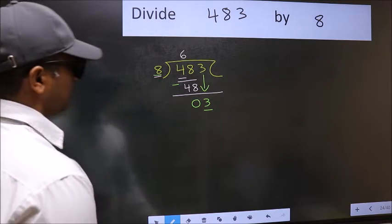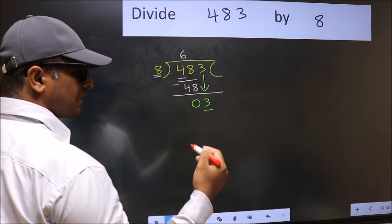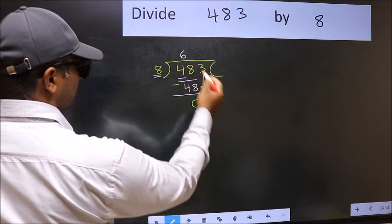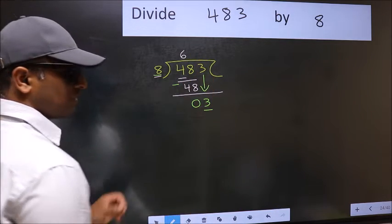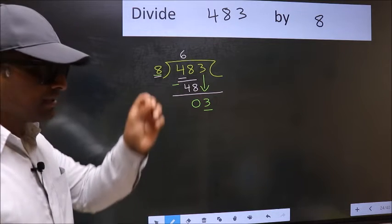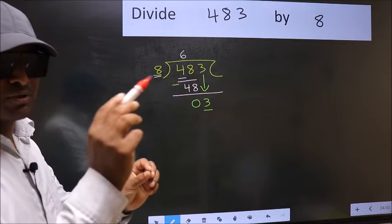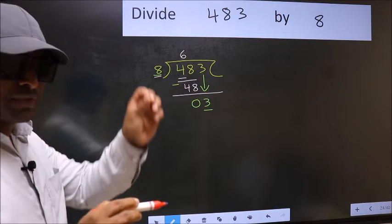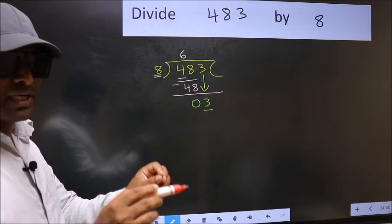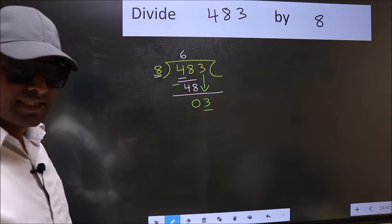Because just now you brought this number down, and in the same step you want to put dot and take 0, which is wrong. I repeat. Bringing the number down and also put dot take 0, both at the same step, you should not do.